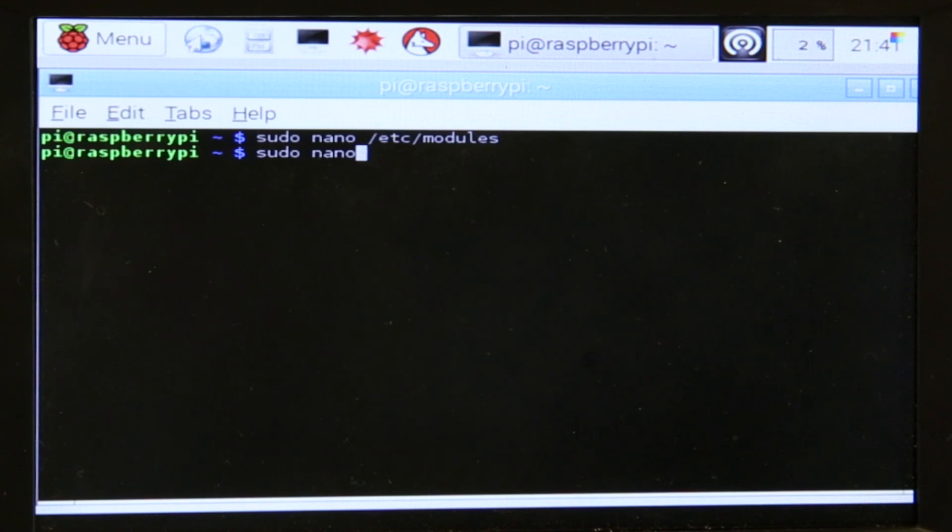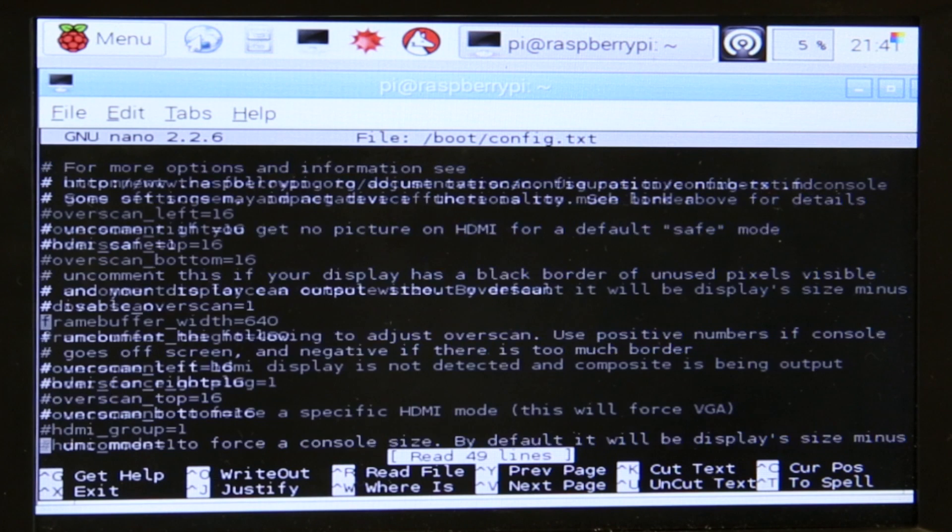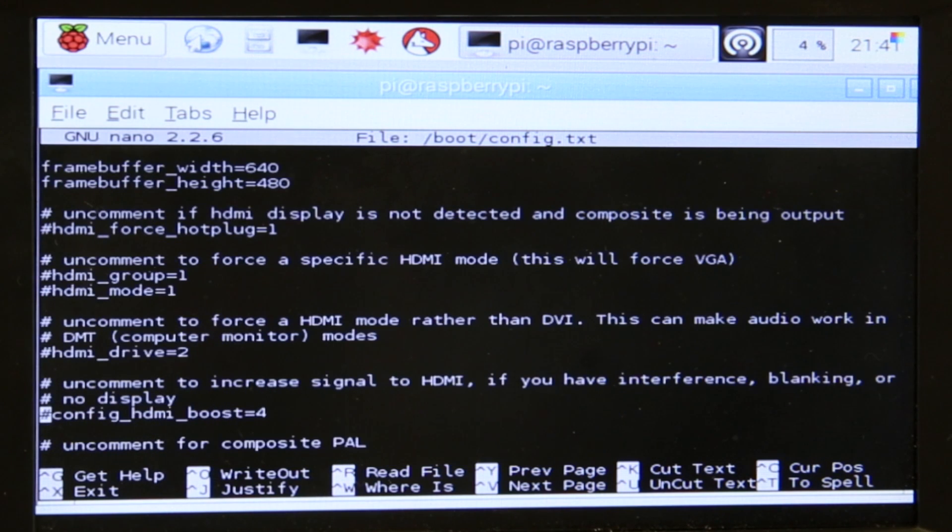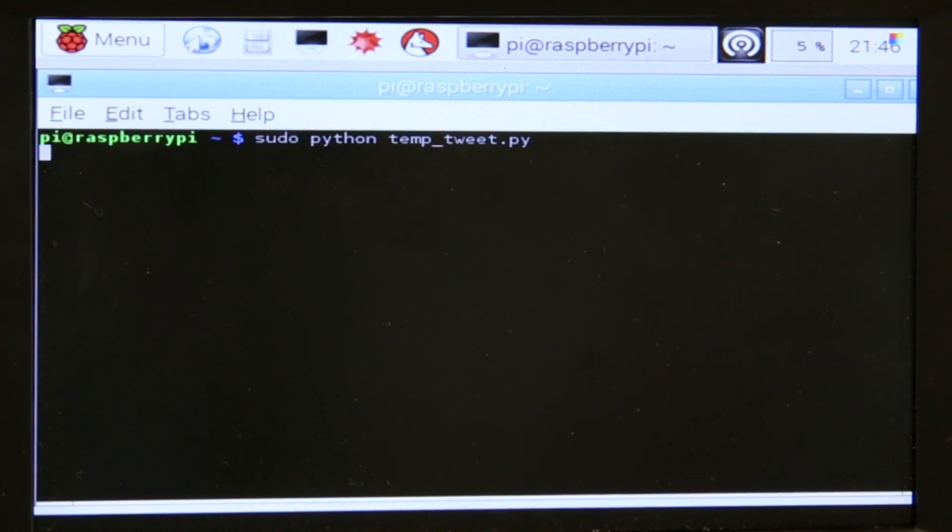And the last thing that we need to do, which was not covered in those episodes, is add a couple of lines to bootconfig.text. This is something that was newly added to Raspian in order to get i2c working. Scroll all the way down, and at the bottom, add the lines dtparam equals i2c1 equals on, and dtparam equals i2c underscore arm equals on. And with those changes, we can run the exact same Python script.